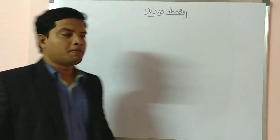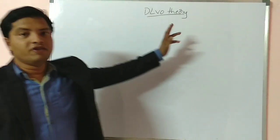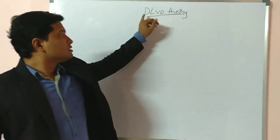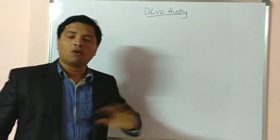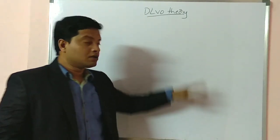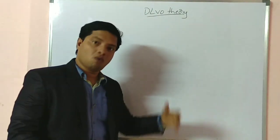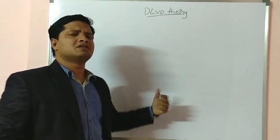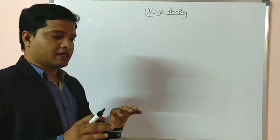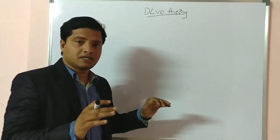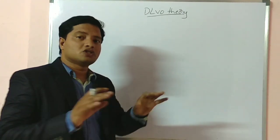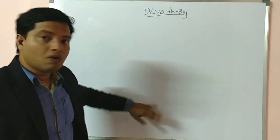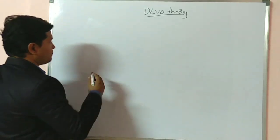Hi! Today we are going to learn about DLVO Theory. First we will see what you know about this. DLVO is the name of four scientists who coined this theory: Derjaguin, Landau, Verwey, and Overbeek. We will see what this theory says. In short, this theory relates charge on the particle and distance between the particles.